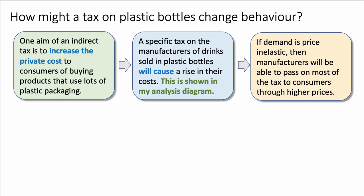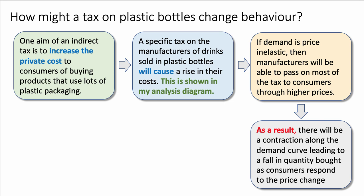Building the chain of reasoning: the tax will cause a rise in costs. If demand is price inelastic, as we saw in the second diagram, then manufacturers will be able to pass on most of the tax to the consumer — they'll be able to raise the price. That's called passing the burden of the tax. As a result — a connective phrase that helps glue together great analysis — there'll be a contraction along the demand curve, leading to a fall in quantity bought as consumers respond to the price change: a behavioural change incentivised by the higher price.